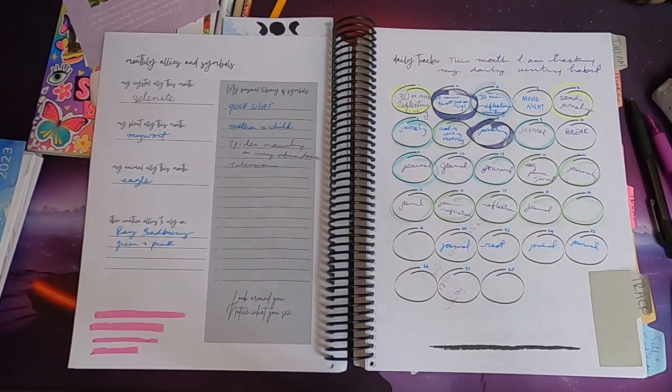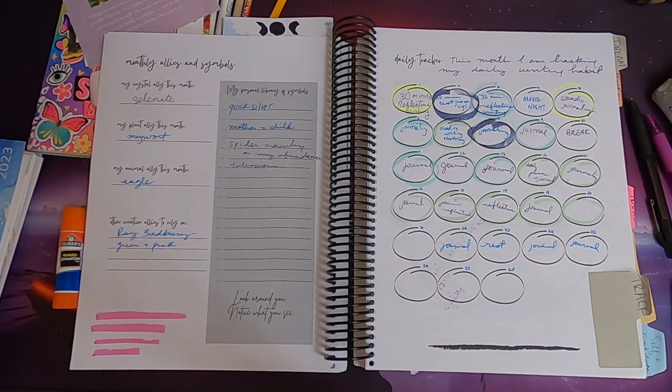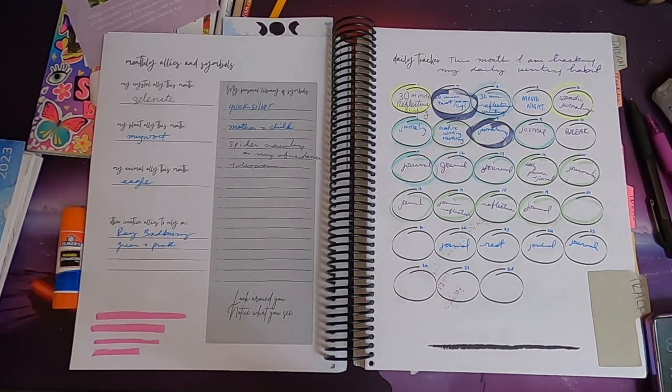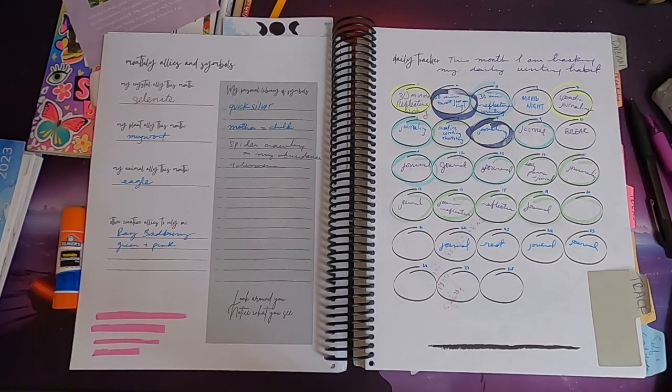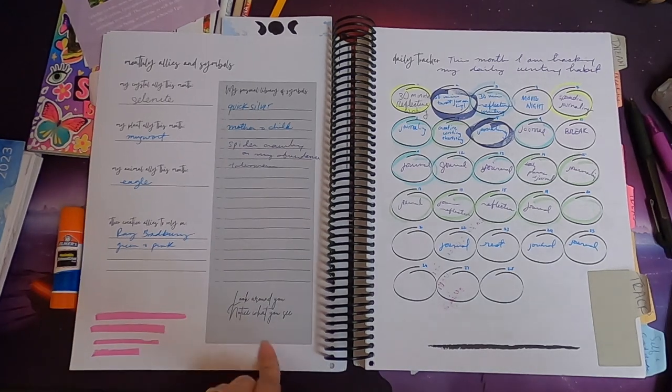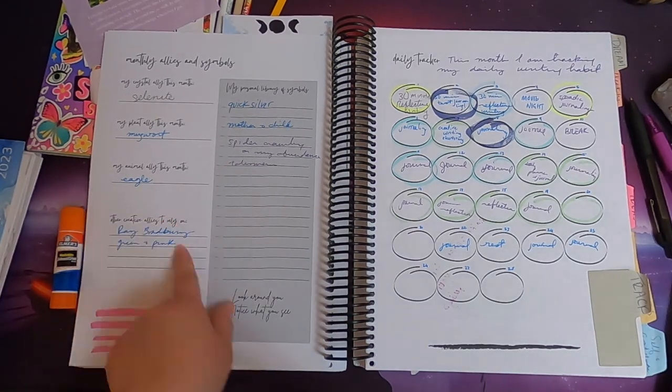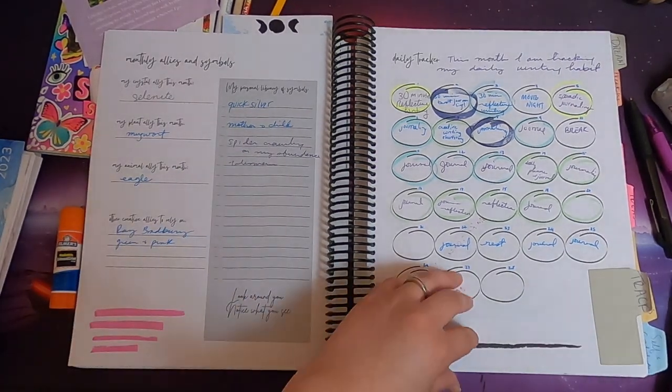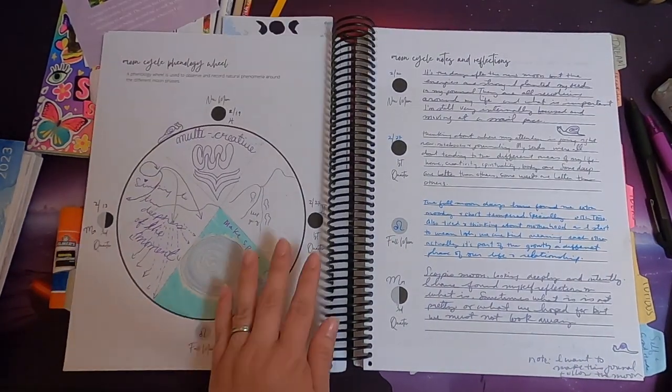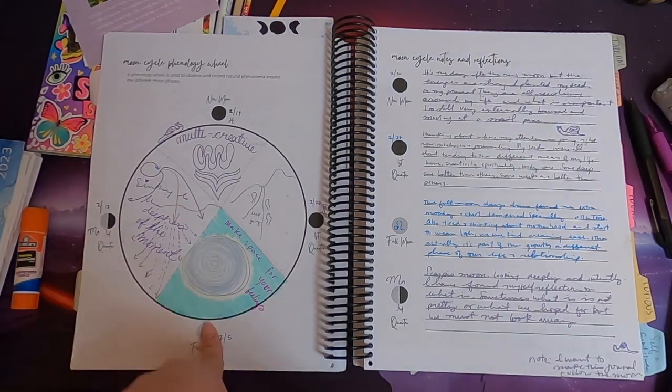I haven't filled out the rest of my tracking, but basically every time I journaled I kept track of what kind of writing I was doing. Mostly I do journaling, I tried doing creative writing so I wrote a short story or the beginning of a short story. I also did some reflective writing on specific topics that were on my mind. Then the other part that was really important to me was this part about the monthly allies and symbols, but I noticed that in February I didn't really pay a lot of attention to the symbols that were coming up for me, but it has that space.